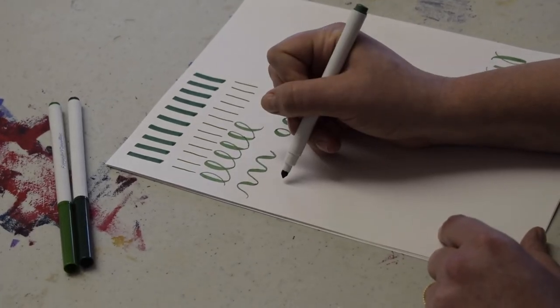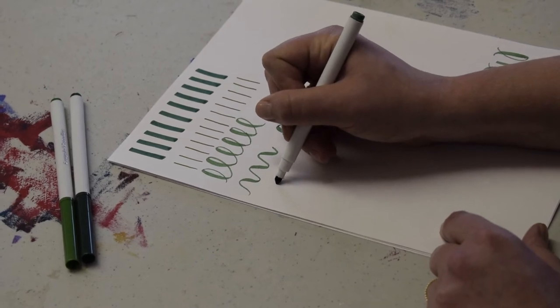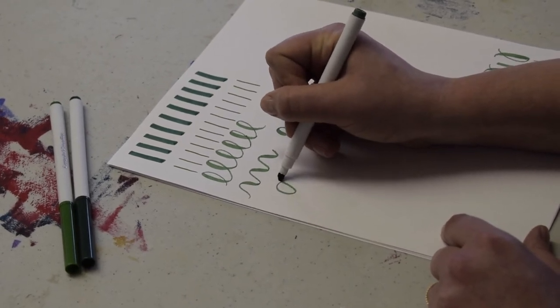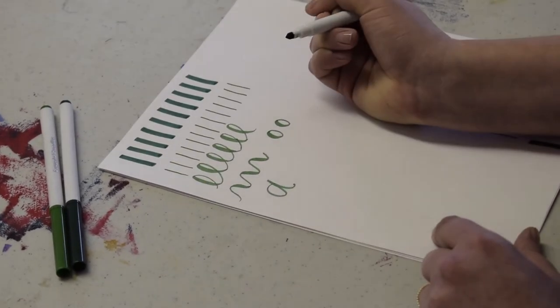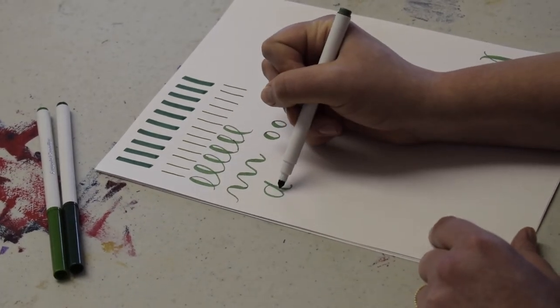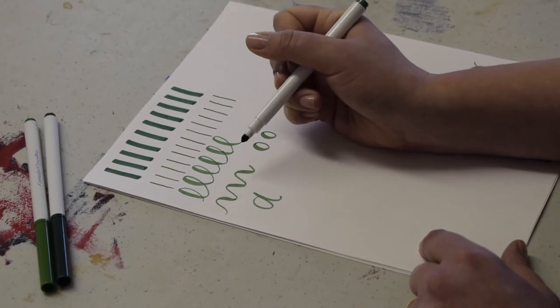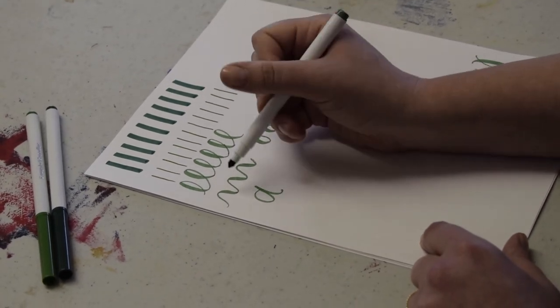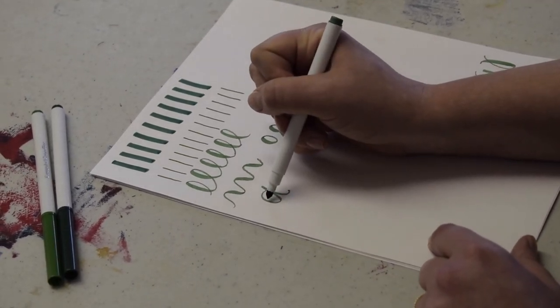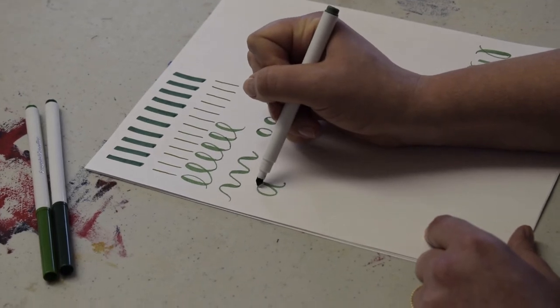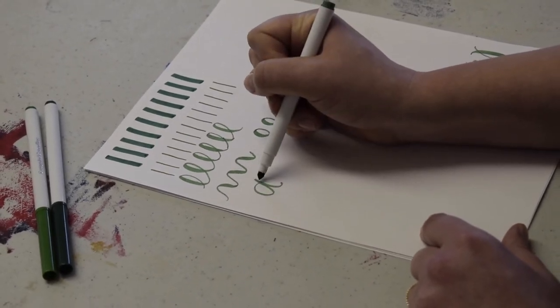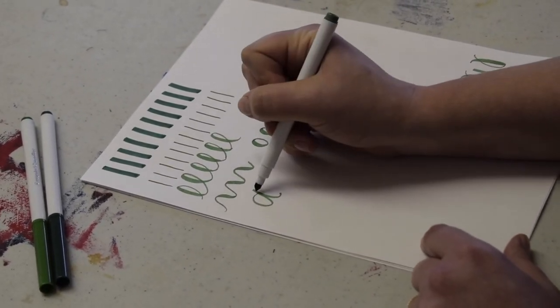Without changing my pressure at all, I'm going to draw the letter A. As you can see, my pressure is consistent throughout the letter. Now, all I have to do is go back in, remember where my marker moved down the paper, which would be here and here, and reapply the pressure.